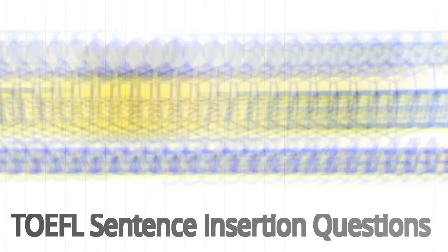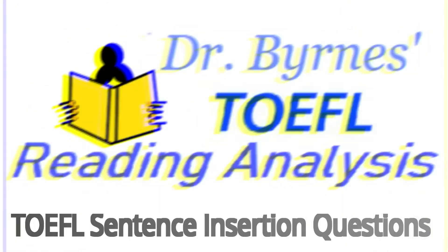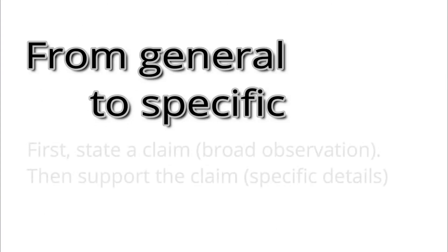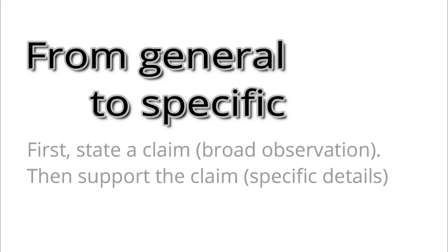From General to Specific. In academic writing, the general to specific order is a commonly used method when developing a paragraph or an essay. In this order, we move from a broad observation about a topic to specific details that support the observation.